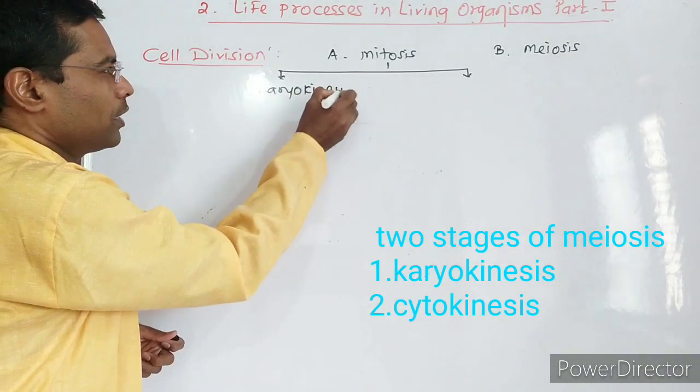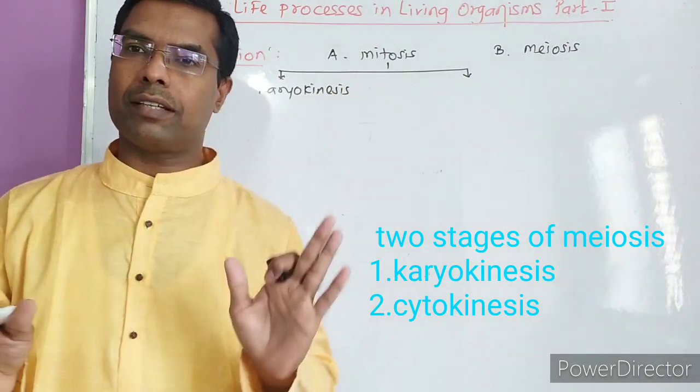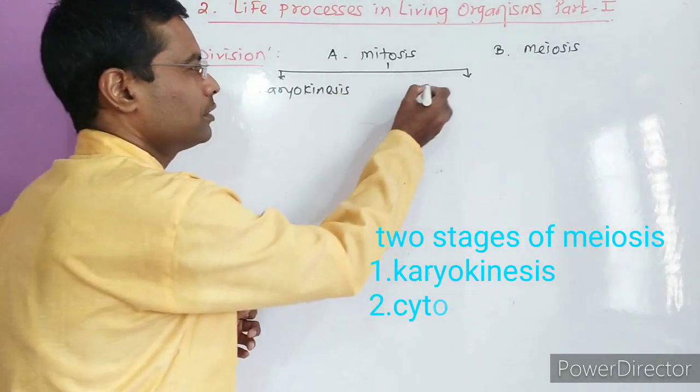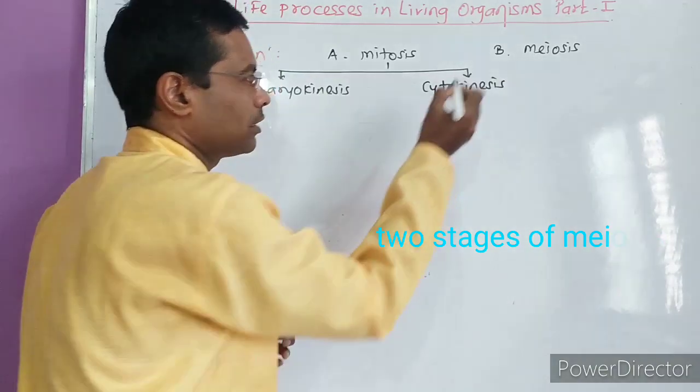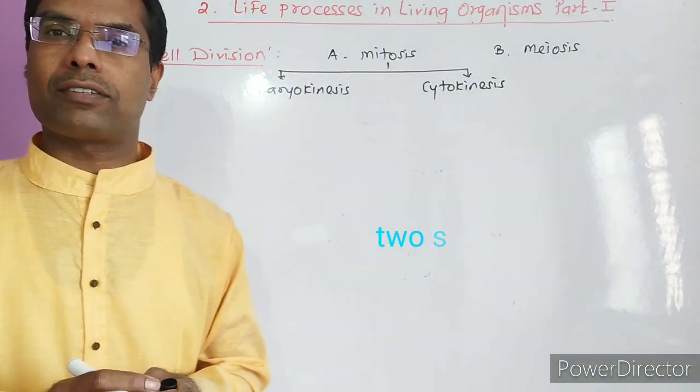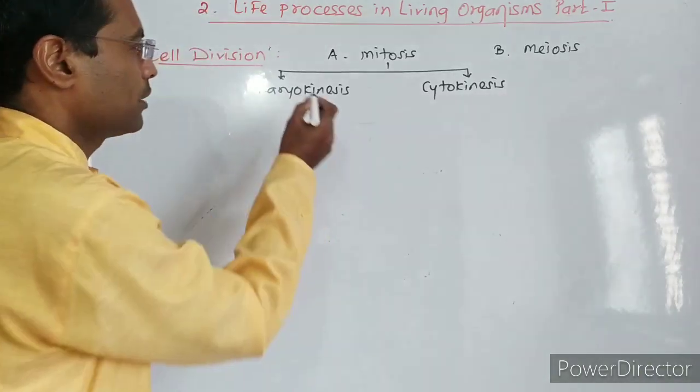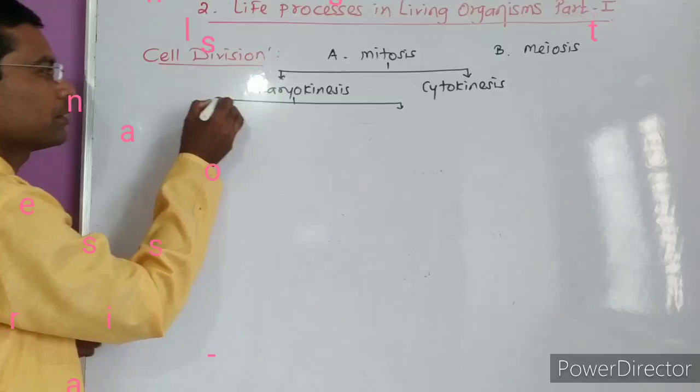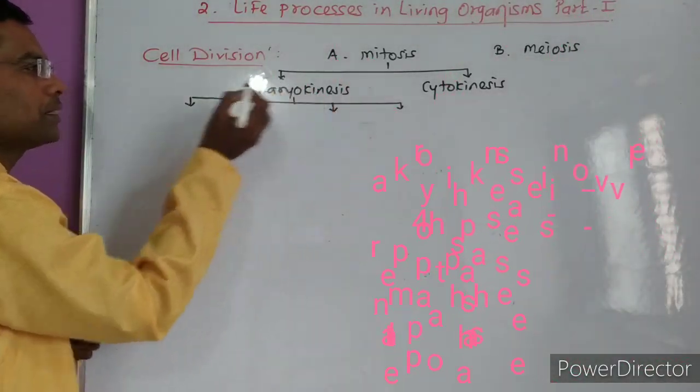In karyokinesis there is division of nucleus. First the nucleus divides, and after that the cytoplasm divides. The second step is cytokinesis. Karyokinesis consists of four important phases.